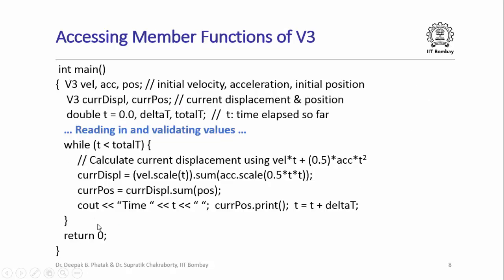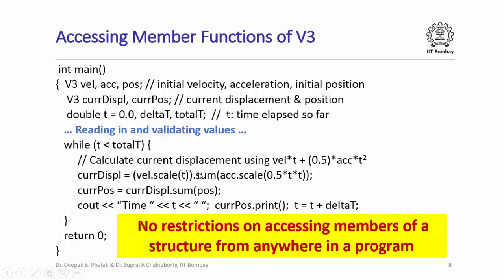Similarly, in the motion simulator program in the main simulation loop we accessed several member functions of objects of type structure V3. For example, we were accessing the member function scale of the object velocity with parameter t, and we were accessing member function scale of the object acceleration with parameter 0.5 t squared. Here we are accessing the member function sum of the object current displacement with parameter pos. So there were absolutely no restrictions on accessing the member functions; we accessed them whenever we wanted at whichever point in the program.